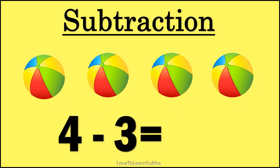In this problem we have to do four minus three, that is we have to subtract number three from four. For this, let's start counting the balls: one, two, three, four. So totally we have four balls.